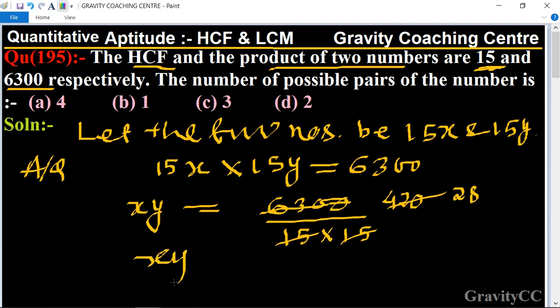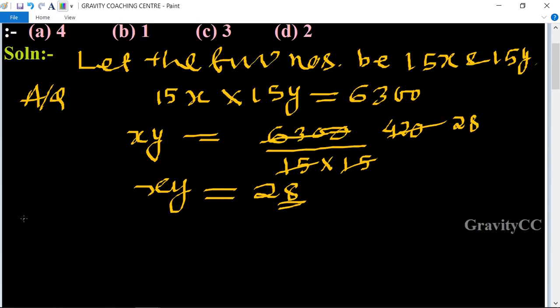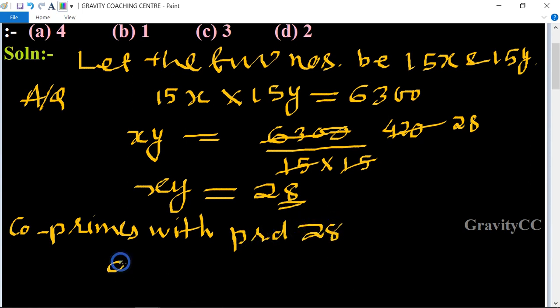Now x and y product is 28, and we need to find co-primes with a product of 28. The co-prime pairs are 1 and 28, and 4 and 7.